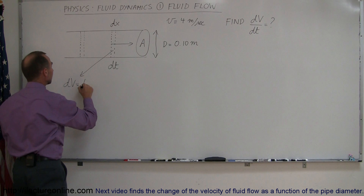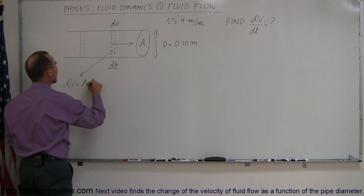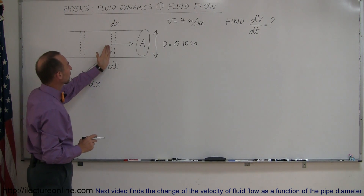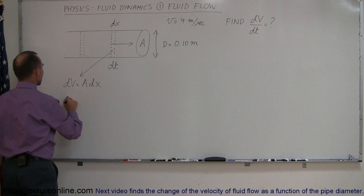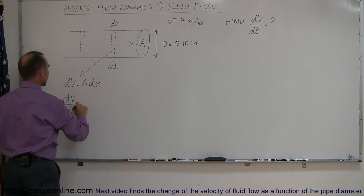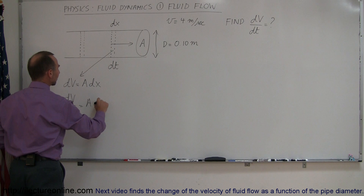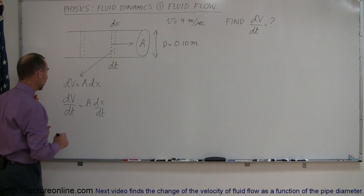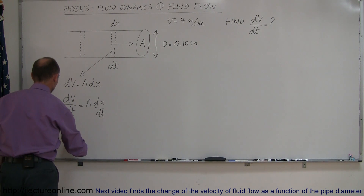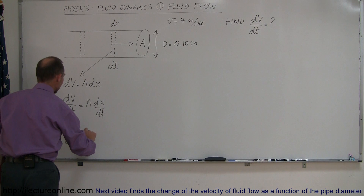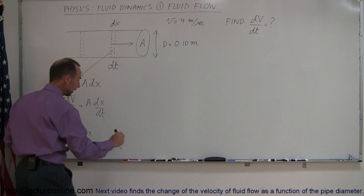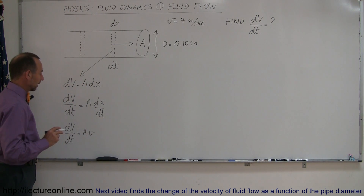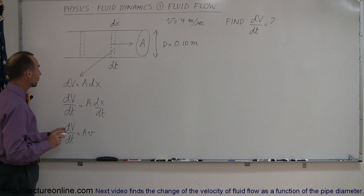The volume dV equals the area A times the displacement dx. If that amount of volume moved in time dt, then dV/dt equals A times dx/dt. And of course dx/dt is the velocity of the fluid, so dV/dt equals A times v.